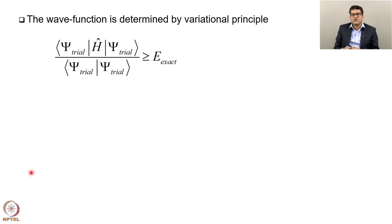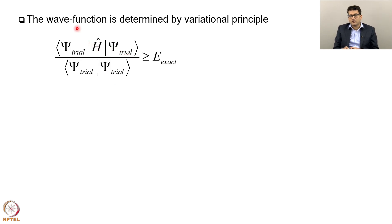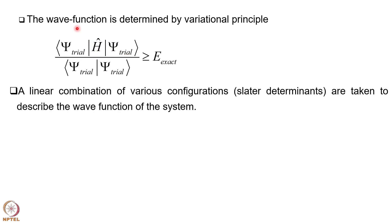In configuration interaction, the wave function is determined by the variational principle, where you take an expectation value of the Hamiltonian with a well-behaved trial wave function which satisfies the boundary condition. This normalization factor ensures the value you get from this expectation value will always be either equal to or higher than the exact energy. This equation is called the Rayleigh-Ritz variational theorem, and by doing that you can determine the wave function.